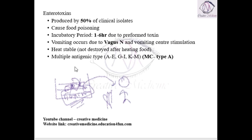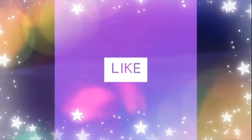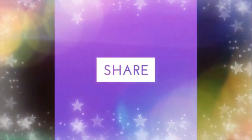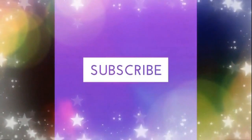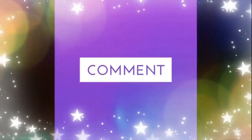In enterotoxin, there are multiple antigenic types — from A to E, G to I, or K to M. But among them, the most common antigenic type in enterotoxin is Type A. Thank you for watching.